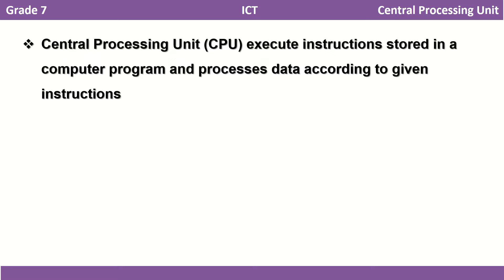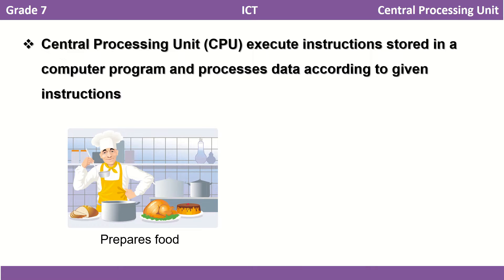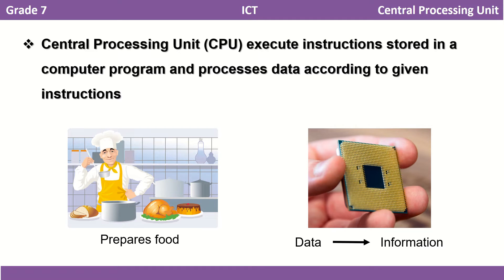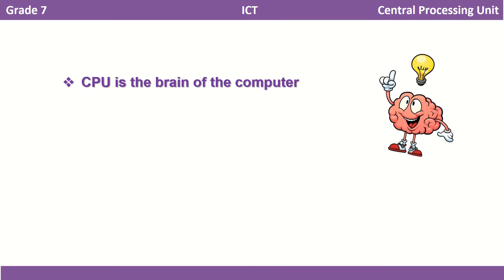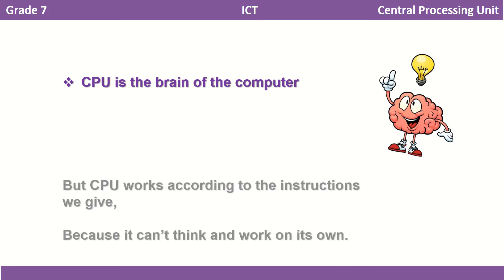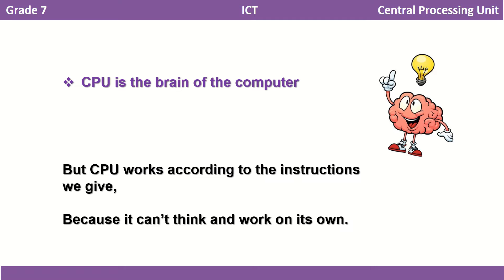Let us now see what this central processing unit does. The chef takes what is in the kitchen and prepares the food. Similarly, the central processing unit takes the inputs we give, processes them according to the instructions given, and produces an output. When we turn on our computer, we assign various tasks to it — that is when the CPU starts working. CPU works according to the instructions given by the program. We can also call the CPU the brain of the computer. But remember, this brain cannot work on its own — it works according to the instructions we give.